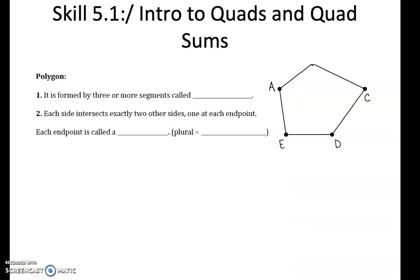Quadrilaterals are types of polygons. Polygons are formed by three or more segments that we call sides. Each side intersects exactly two other sides, one at each endpoint. The endpoint is what we call a vertex.